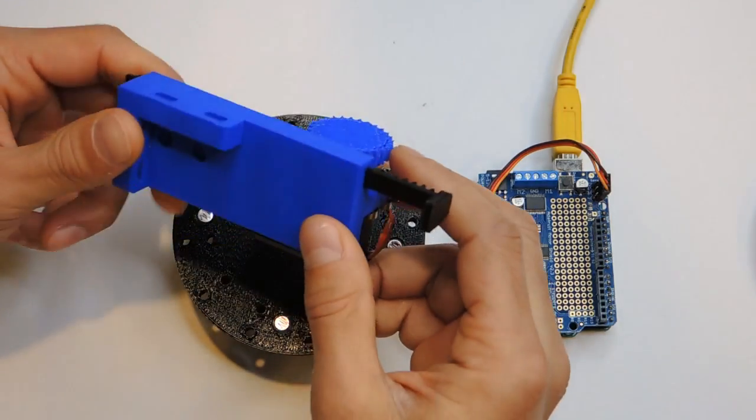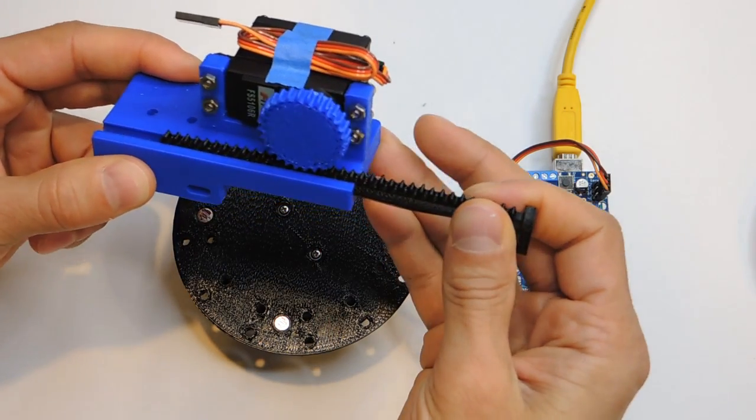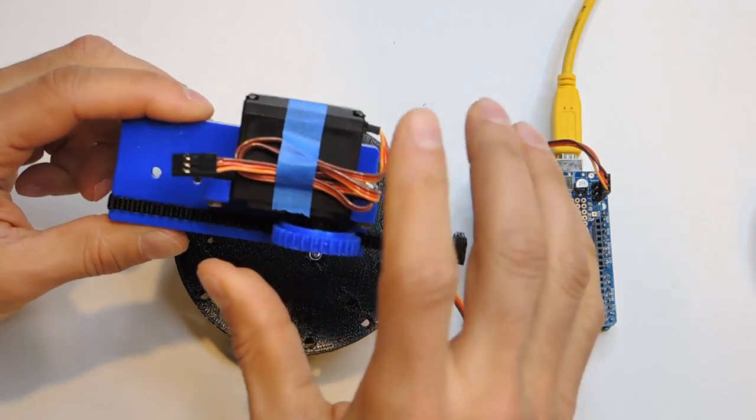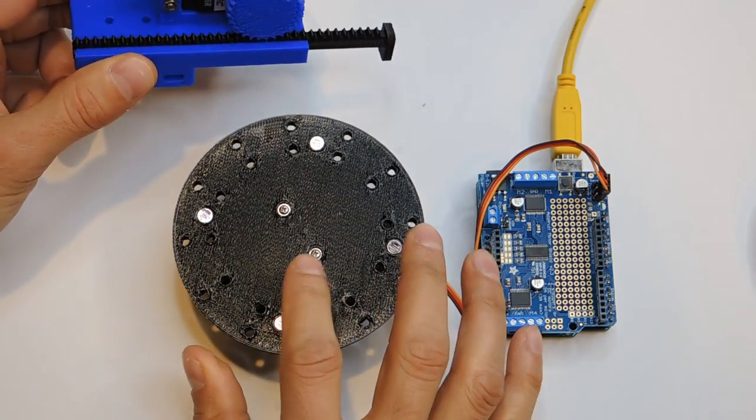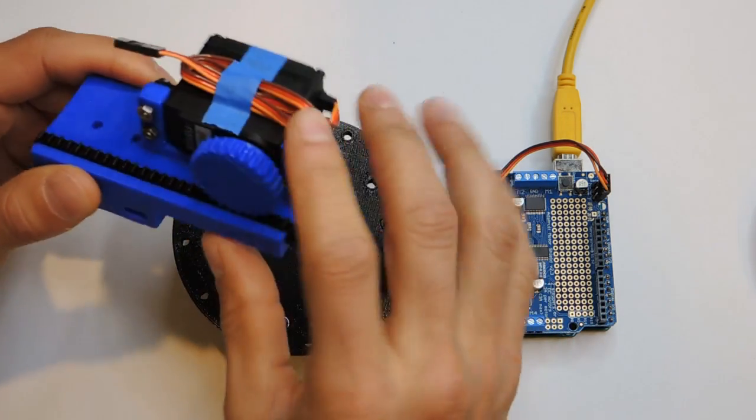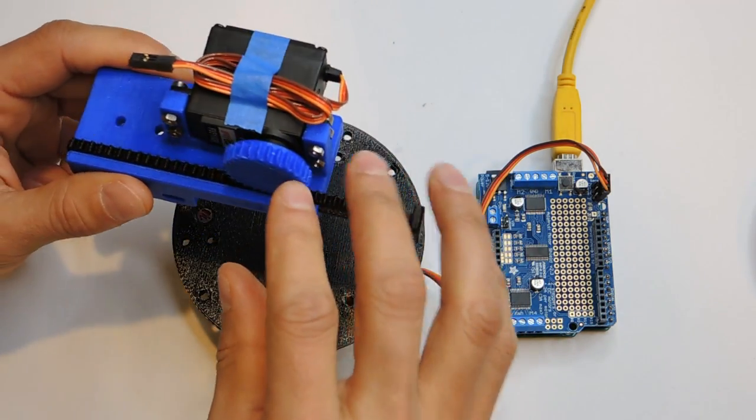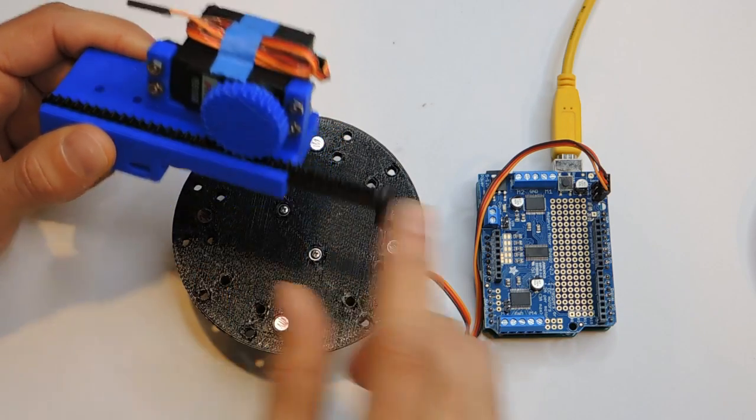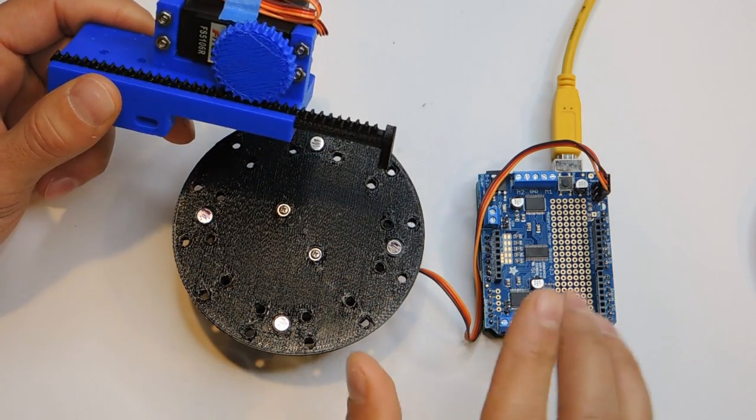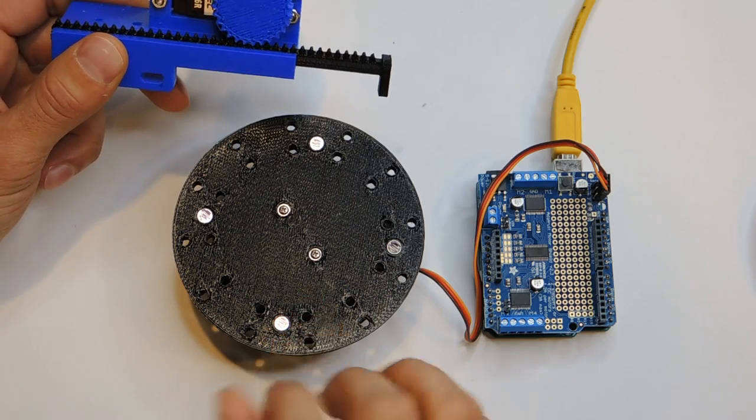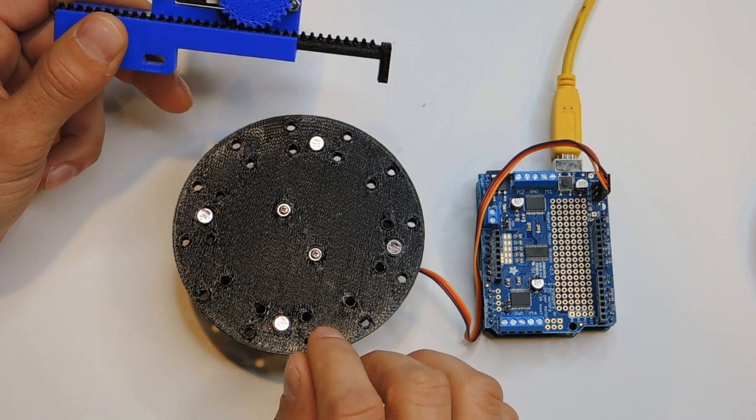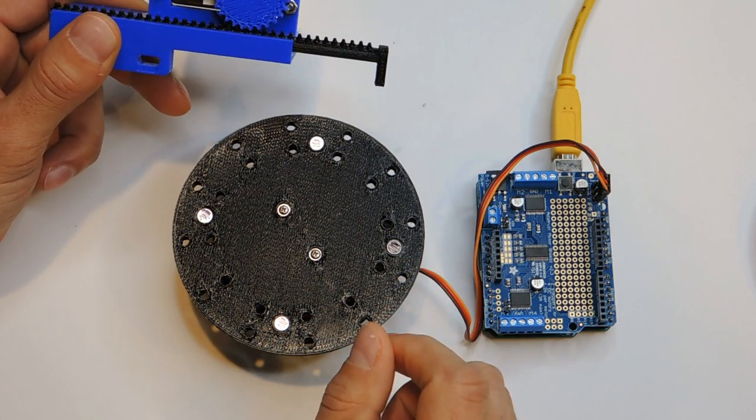I recently did a video on these 3D printed linear actuators that I designed, which use the same type of continuous rotation servo that I'm using in these turntables. In the video for this actuator, I go over in detail the code needed to run these servos using an Arduino. The same type of code applies for these turntables, so I'm not going to go over it again. If you want those details, click here to watch the video I mentioned.